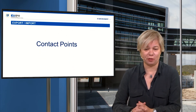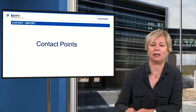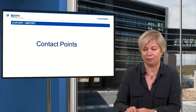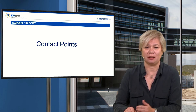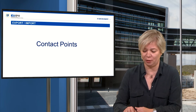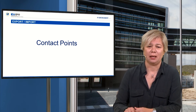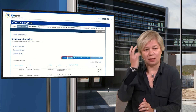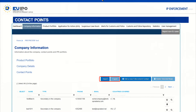First things first — and I think especially for the legal representatives, the most interesting function is the contact points. If you have several accounts, you can have the same contact points for all your client accounts. You can move the contact points. When you enter the company information where you find the contact points, you will find two new buttons: import and export buttons.